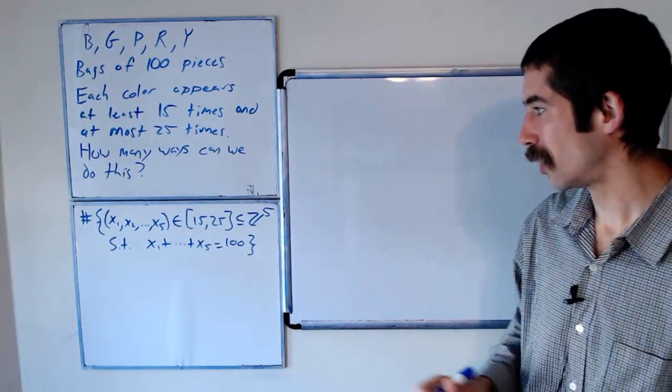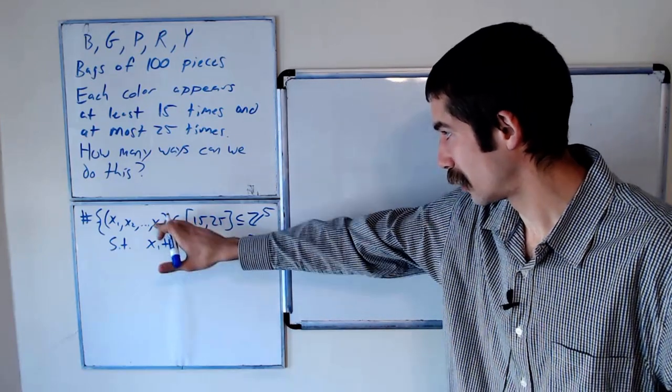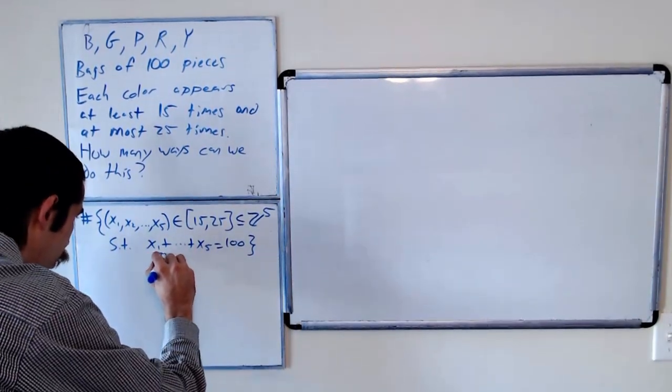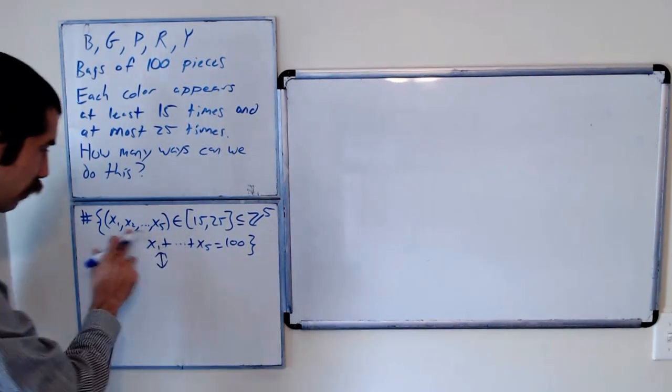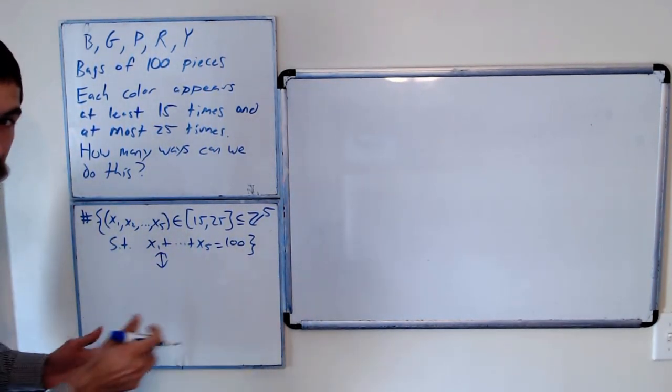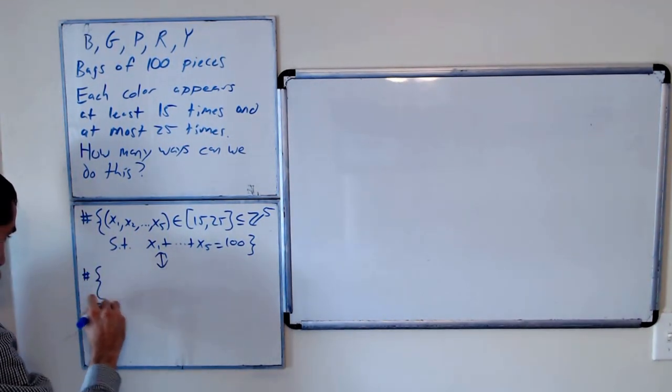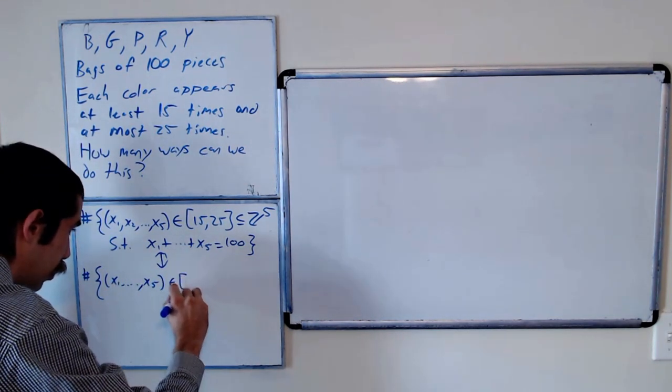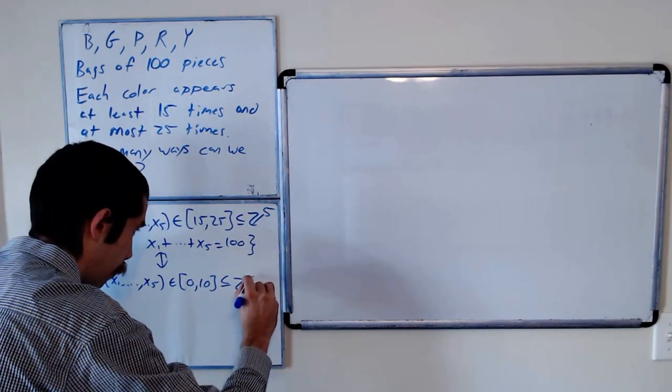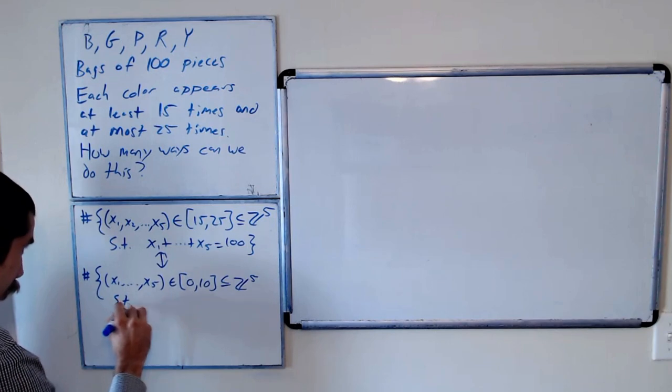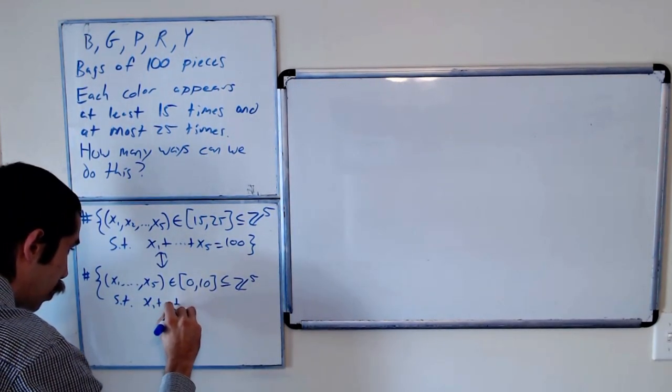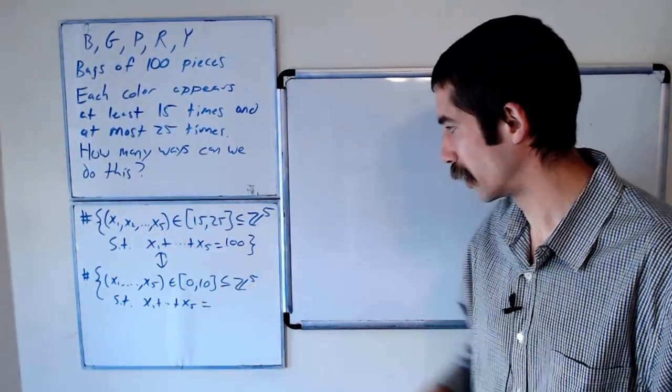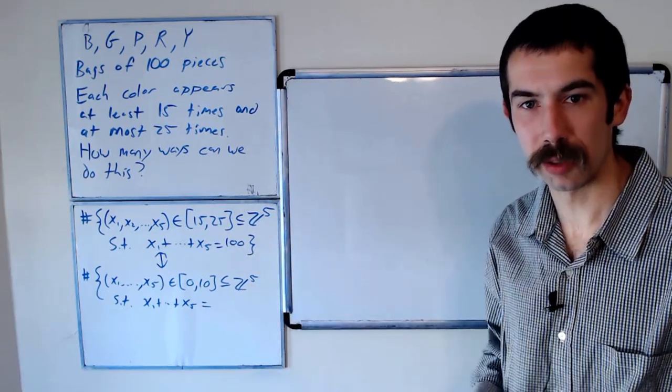So this is what the question is really asking us to do. Find a group of five integers between 15 and 25 that add up to 100. Okay, so the first thing we should note is this set is in bijection with an easier to count set. So let's subtract 15 from each of these numbers. This is in bijection with x1 through x5 in 0 to 10, such that x1 plus x5 is equal to 100 minus 15 times 5, which is 25.